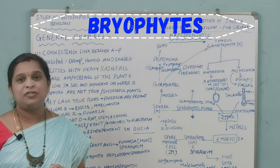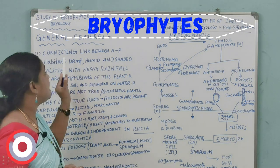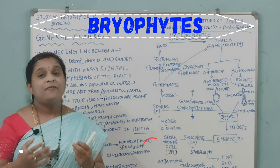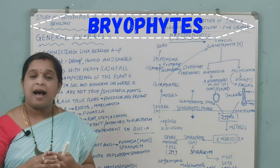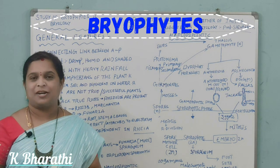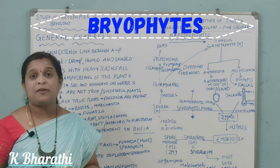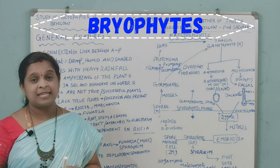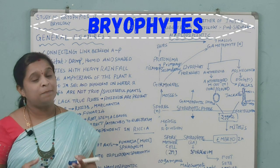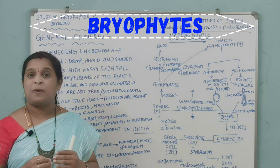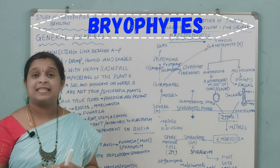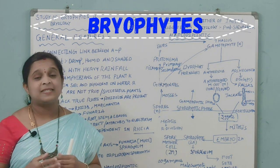The first general feature is that bryophytes are the connecting link between algae and pteridophytes. We have already seen that algae exist in the form of a thallus or filamentous structure. In Spirogyra and Chlamydomonas, the chlorophyll is present as a cup-shaped chloroplast in Chlamydomonas and a spiral-shaped chloroplast in Spirogyra. That is why algae are called green-colored thallus-like structures.